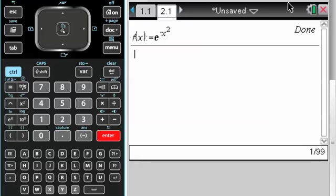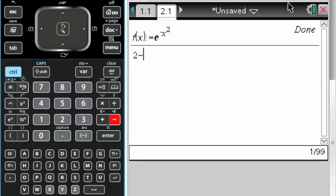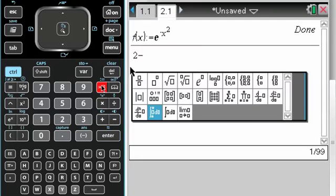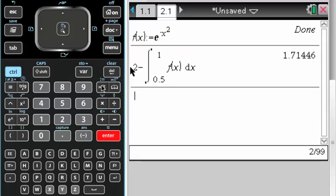And let me go back and see what I was supposed to know. So, 2, and then minus the integral from 0.5 to 1. So, 2 minus the integral from 0.5 to 1 of F of X dx, and I get that.